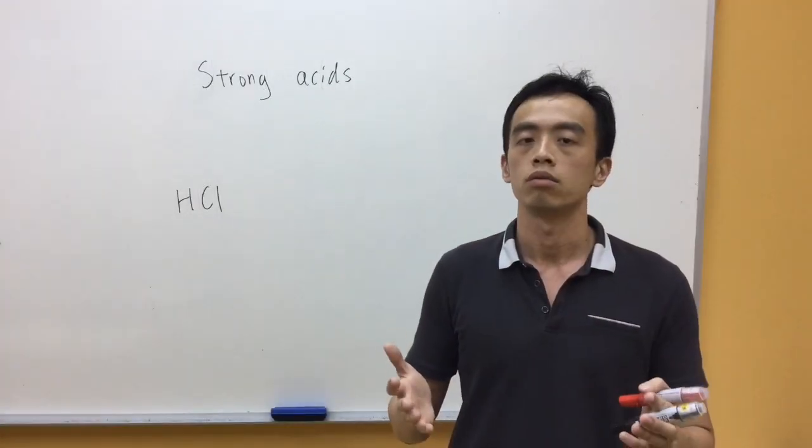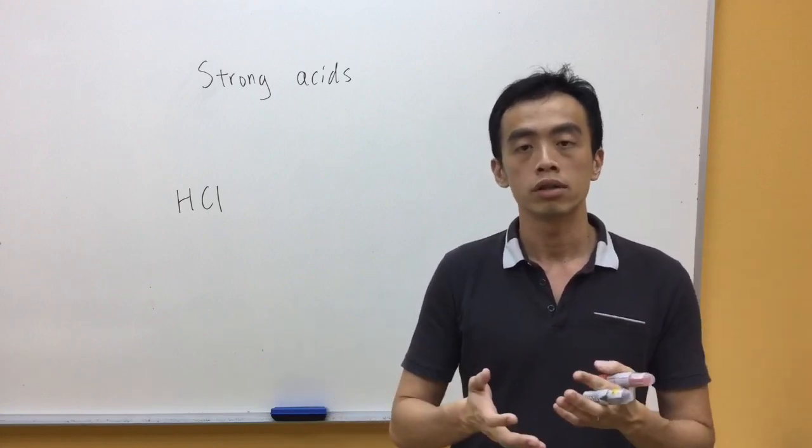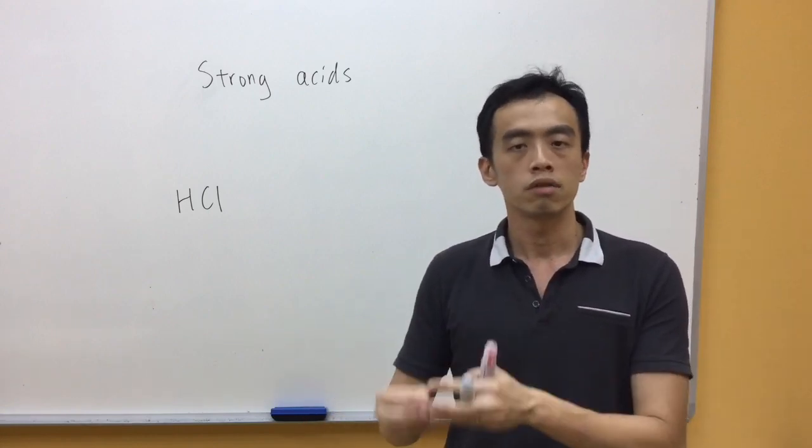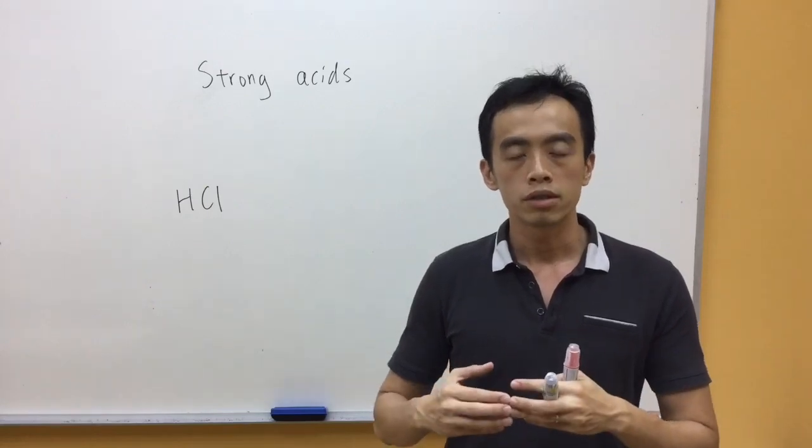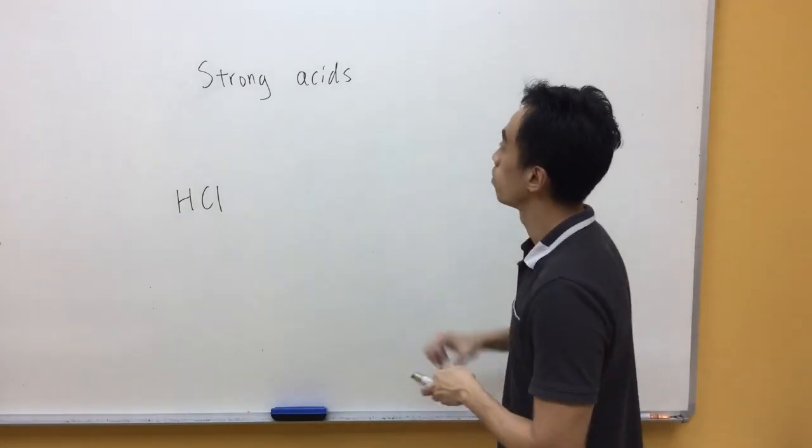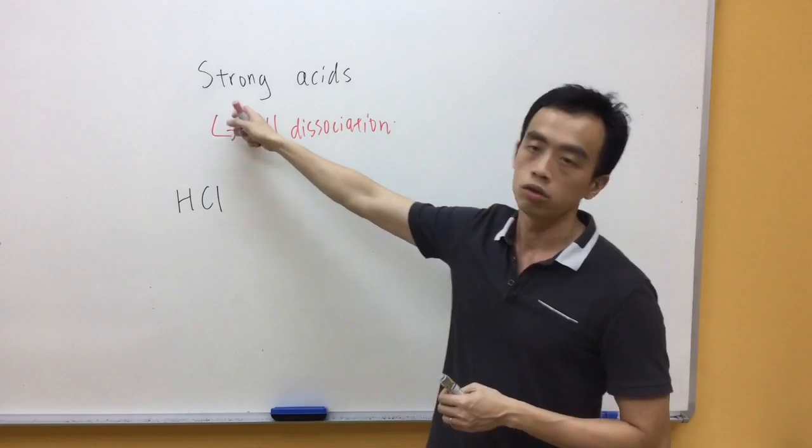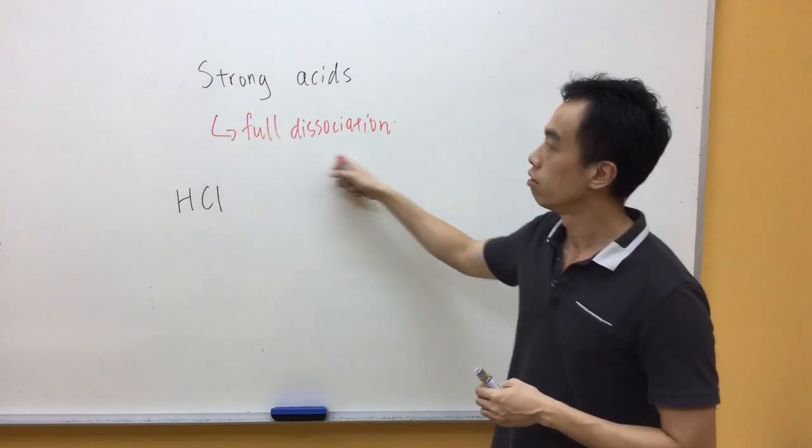Basically, strong acids are acids that will dissociate fully in solution. So if you have a strong acid and dissolve it in solution, 100% of this acid will dissociate and give you ions. So the word strong basically means full dissociation.